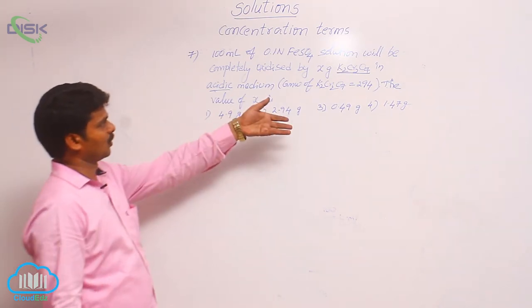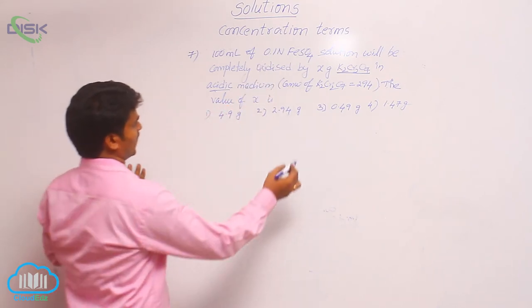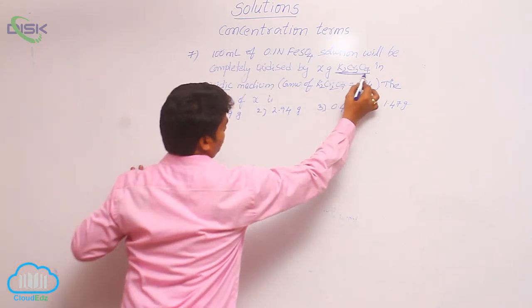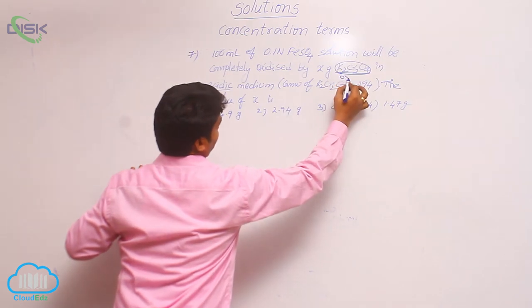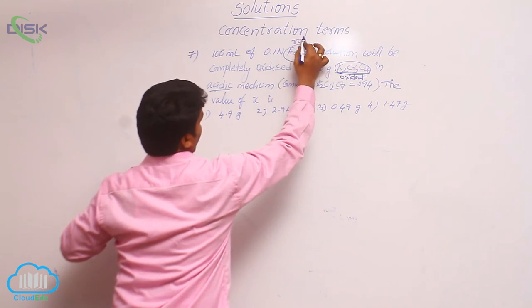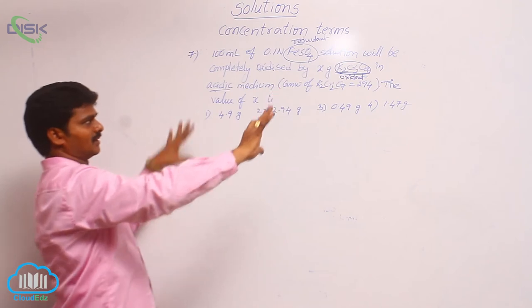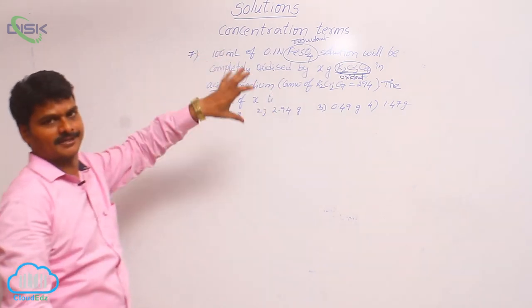Potassium dichromate and ferrosulfate. If you see these two substances, this potassium dichromate acts as oxidant. Similarly, FeSO4 acts as reductant. That means the given problem indicates a redox reaction.